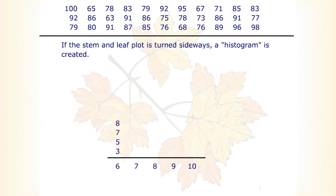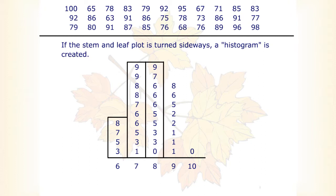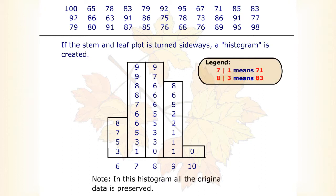If the stem and leaf plot is turned sideways, a histogram is created. In this histogram, all the original data is preserved.